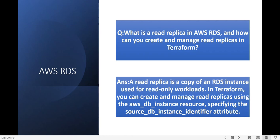Next question: what is a read replica in AWS RDS and how can you create and manage one in Terraform? A read replica is a copy of the actual RDS instance used for read-only workloads. In Terraform you can create and manage a read replica using the aws_db_instance resource and specifying the source DB instance identifier.